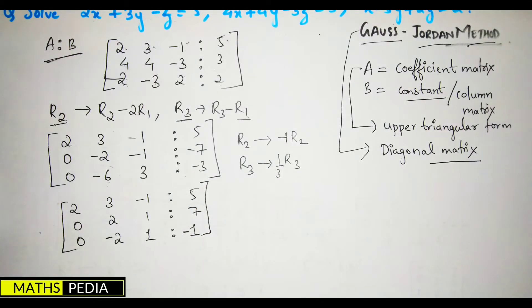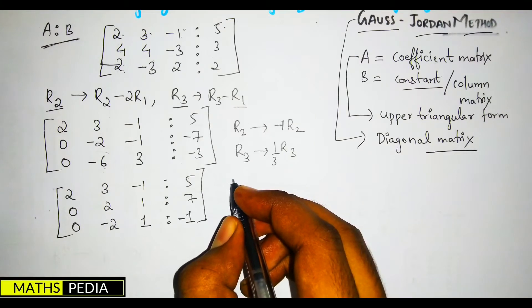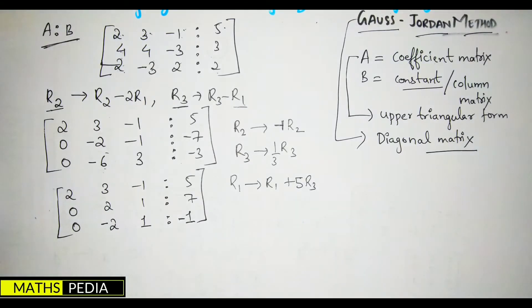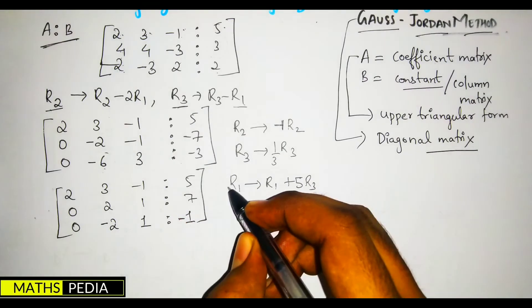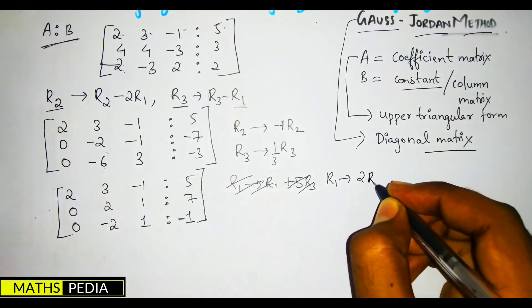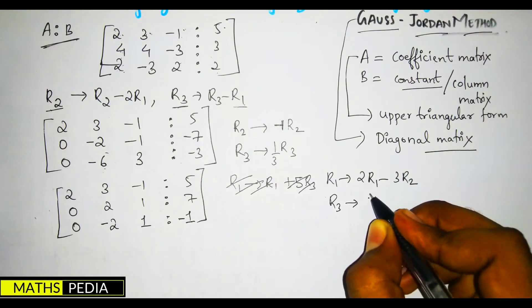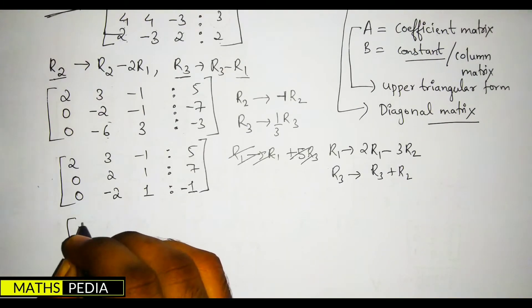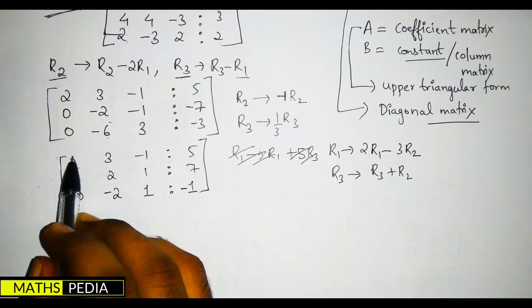Now we need to make more non-diagonal elements zero. We apply R1 = 2R1 − 3R2 and R3 = R3 + R2. After these operations, R1 becomes [4, 0, -5 | -11], R2 remains [0, 2, 1 | 7], and R3 becomes [0, 0, 2 | 6].